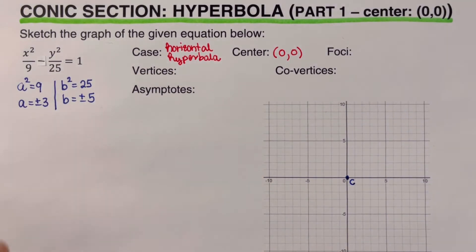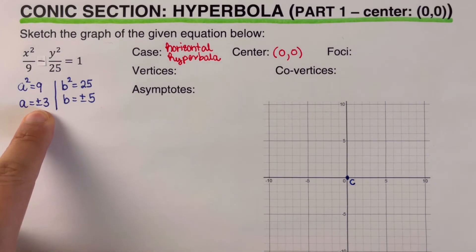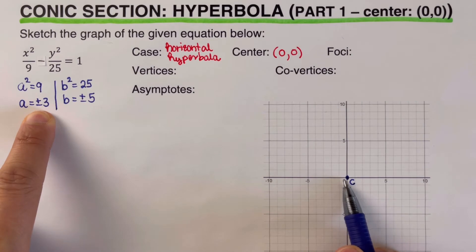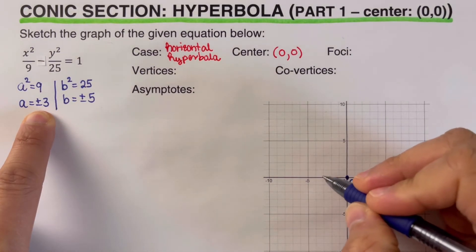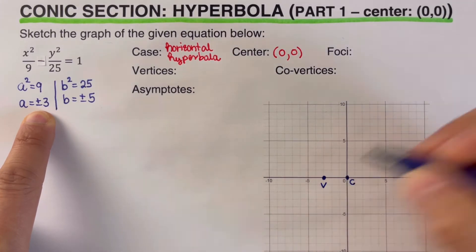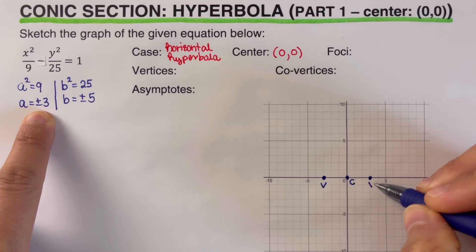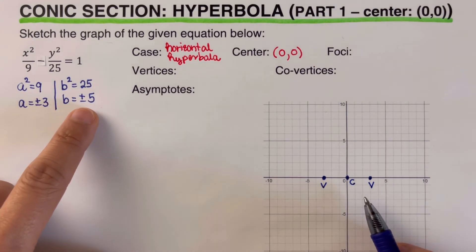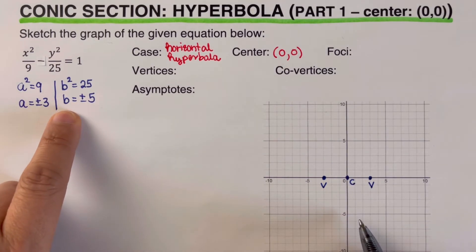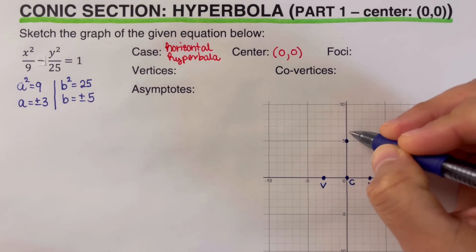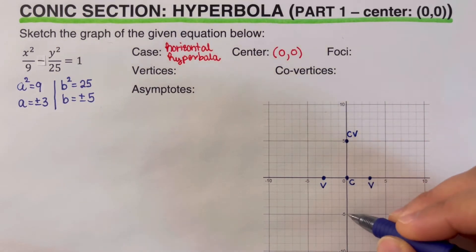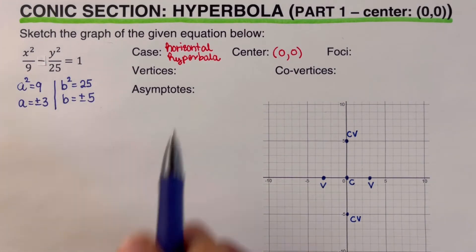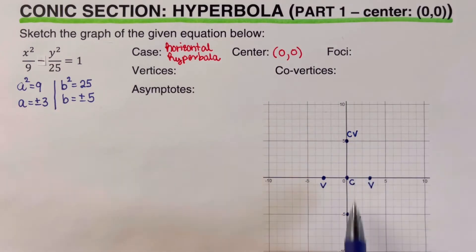We plot the center at zero zero, labeled C. Since a equals three and this is a horizontal hyperbola, we count three units to the left and three to the right to locate the two vertices. Since b equals five, we go five units up and five units down to locate the two co-vertices. We then write the coordinates of the two vertices and the two co-vertices.